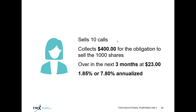Selling 10 contracts means this investor generates $400 over that time frame — calculated as $0.40 per share times a 100 unit multiplier times 10 contracts. That represents about a 1.85% return over the period, or a 7.8% return annualized. What we need to recognize is that as long as that written call option is in place, the investor does not have the opportunity to participate in capital gains over the strike price.